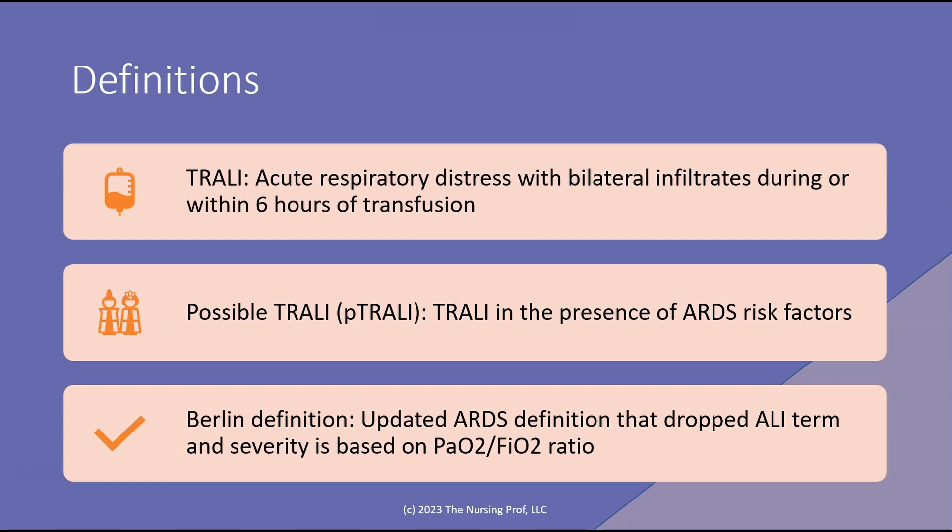Possible TRALI is when we have the symptoms of TRALI in the presence of ARDS risk factors. So we don't necessarily have this acute lung injury, but we have the risk factors there for ARDS, which would put that patient at high risk for developing a TRALI type of response.